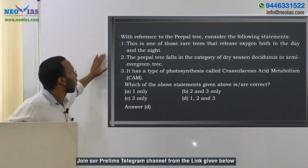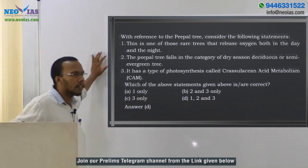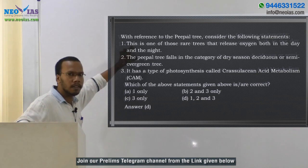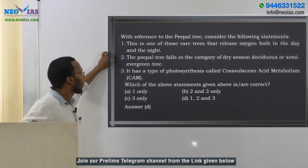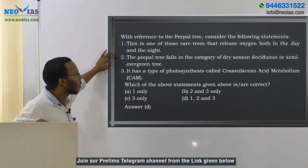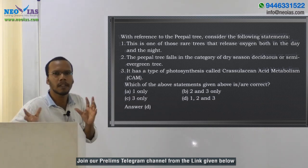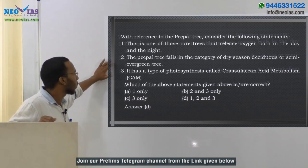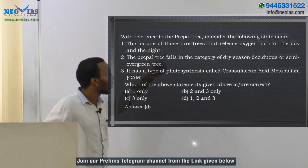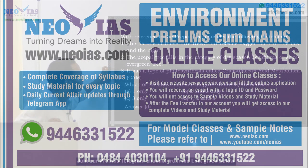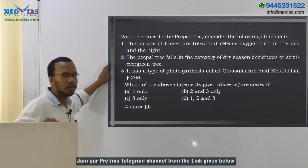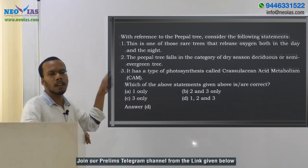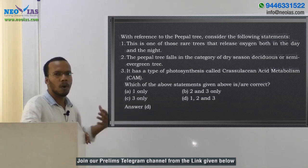Coming back to the question: all three statements are correct regarding the peeple tree. Statement 1 — it releases oxygen both in day and night — is correct, depending on whether it is in epiphytic or soil state. Statement 2 — the peeple tree falls in the category of dry season deciduous or semi-evergreen tree — is also correct. Statement 3 — it has the photosynthesis type called Crassulacean Acid Metabolism — is also correct. So the answer is D: all three statements are correct.